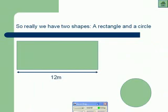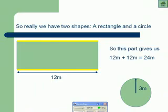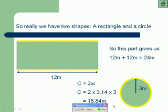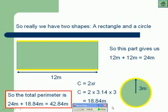We know we've got 12 metres length for the rectangle and a radius of 3 metres for the circle. For the rectangle, we're going to have 12 metres on the top and 12 metres on the bottom, so that's going to be 24 metres. We know that our circumference is 2πr, which is pi times 2 lots of r. So our circumference is 2 times 3.14 times 3, giving us 18.84 metres. So our total perimeter, if we add these together, will be 24 plus 18.84, which is 42.84 metres.